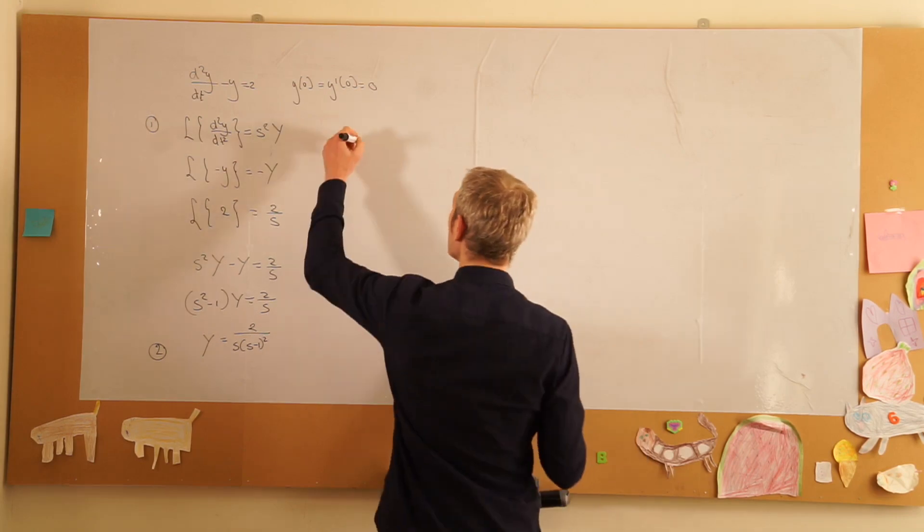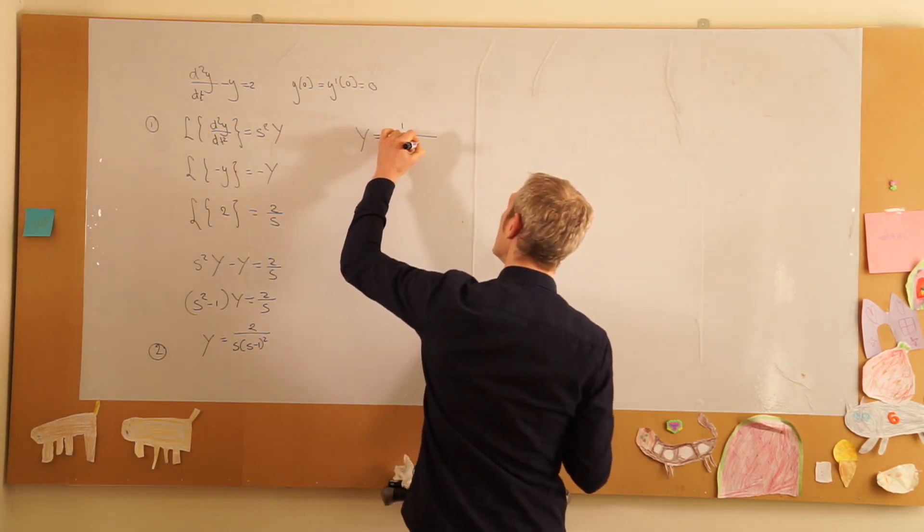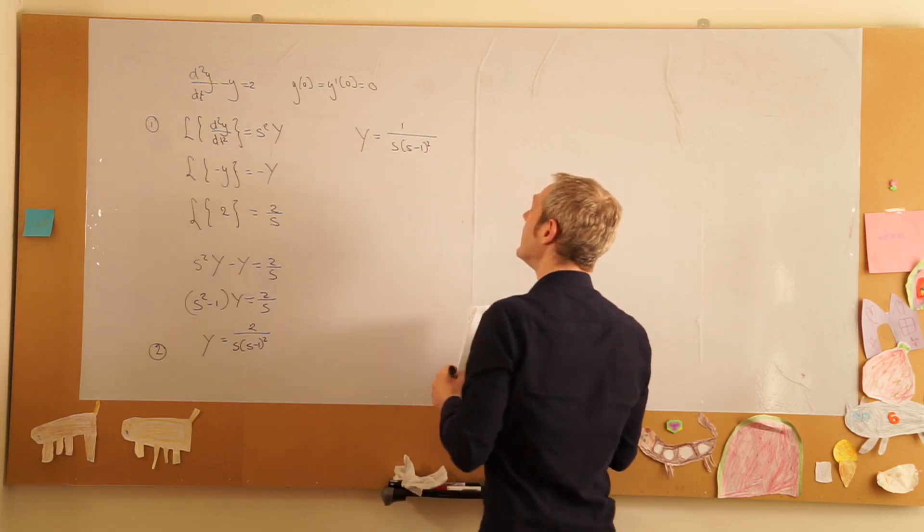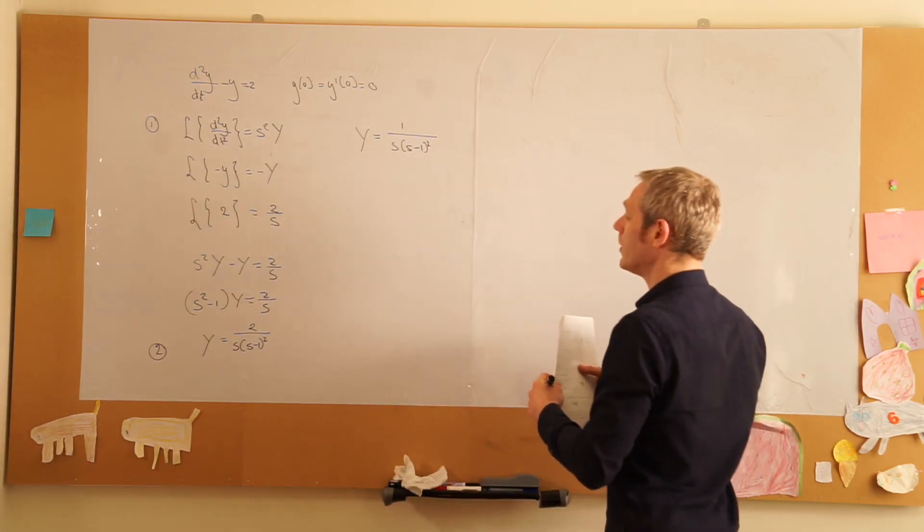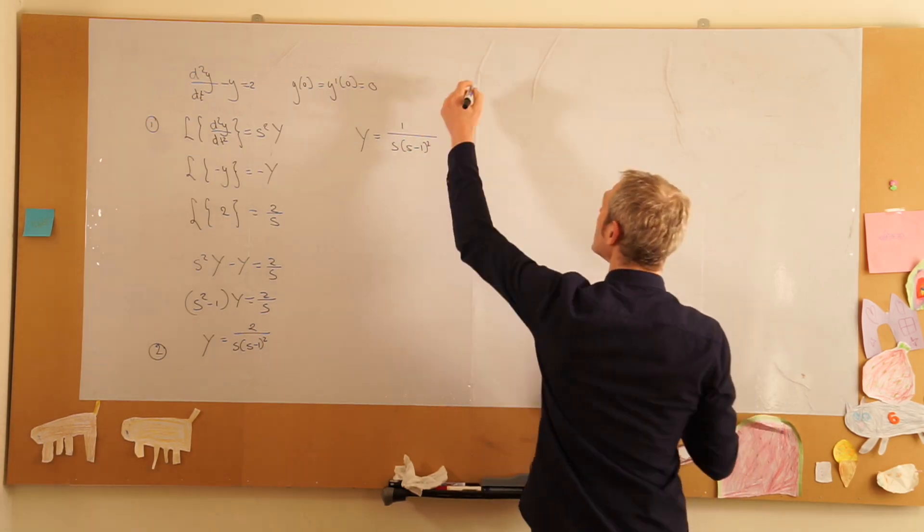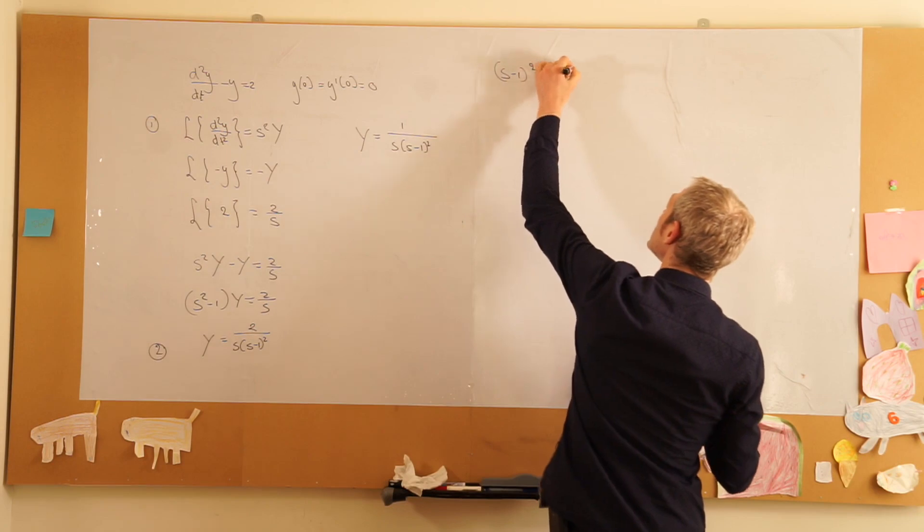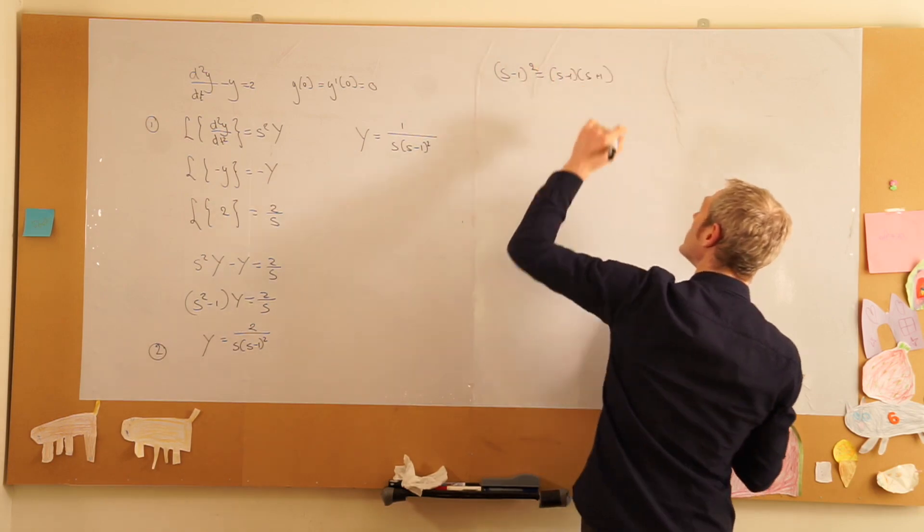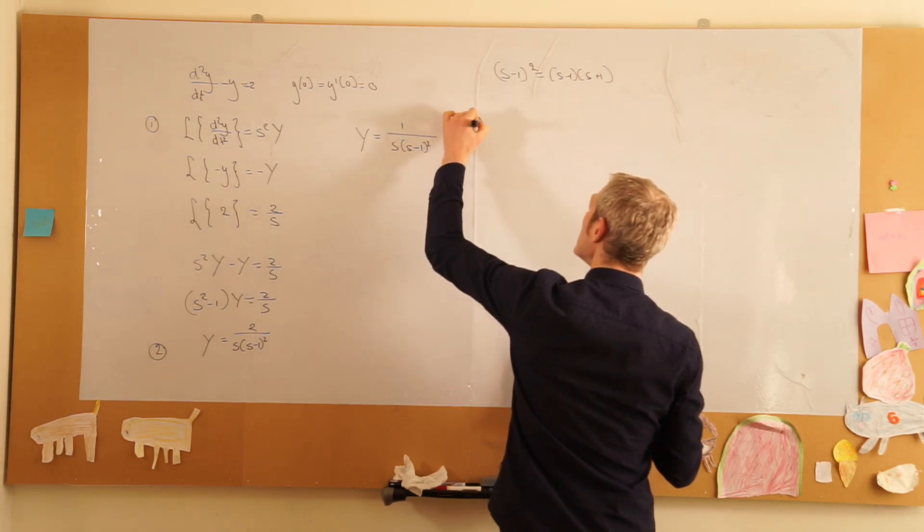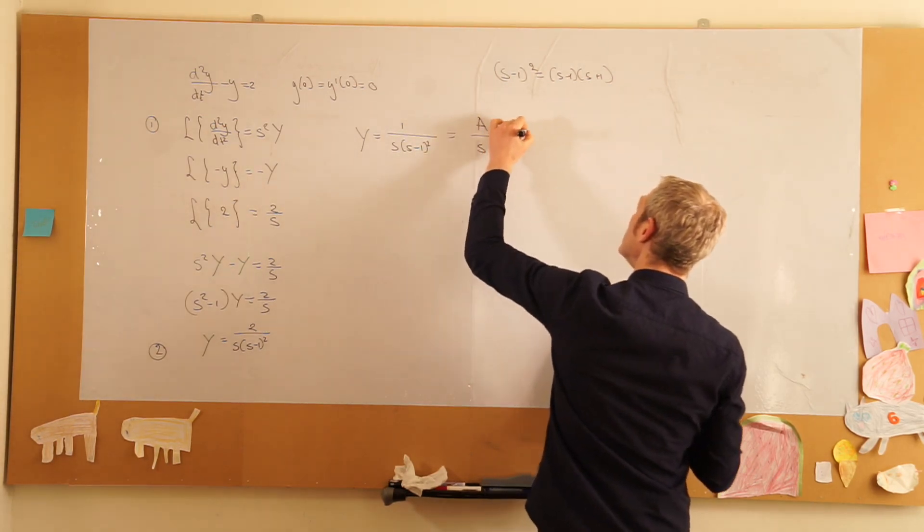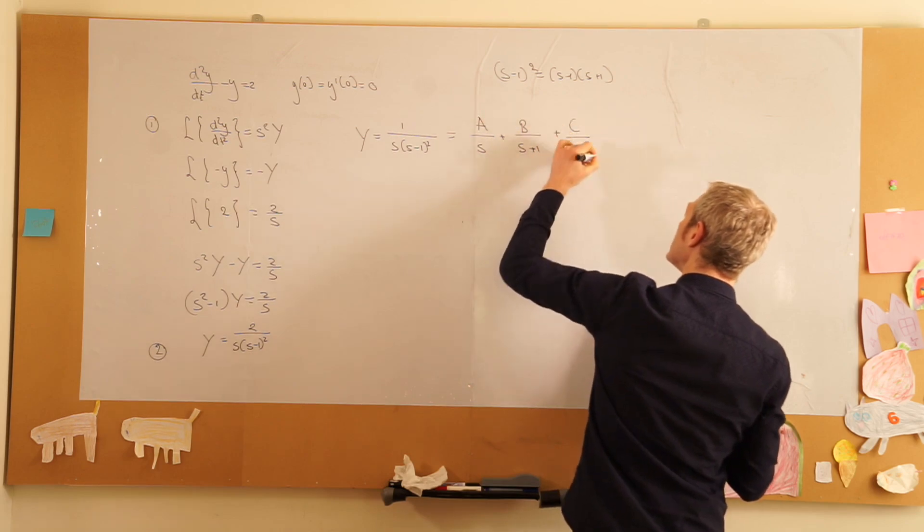Well, I can rewrite Y in terms of its partial fractions, where we know that s squared minus 1 is (s minus 1) times (s plus 1). So we'll rewrite this as a sum: a over s plus b over (s plus 1) plus c over (s minus 1).